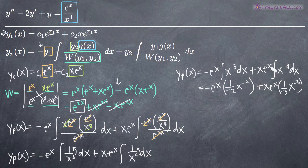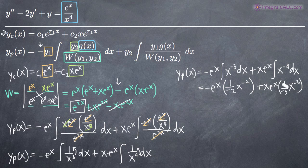One thing to note: normally when taking an integral you add a constant of integration. However, when using variation of parameters with this particular solution formula, you don't need to add the constant of integration. Those constants end up canceling when you combine the particular solution with the complementary solution, so you can omit them unless your professor specifically asks for them.